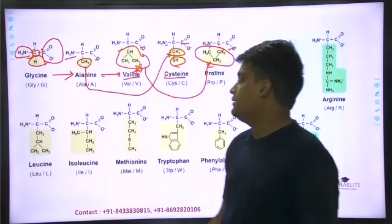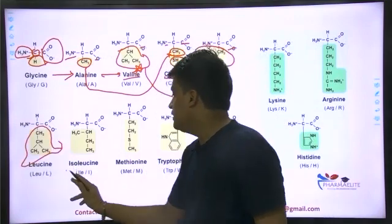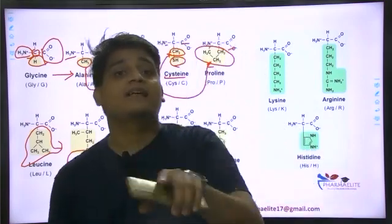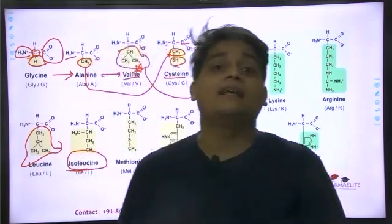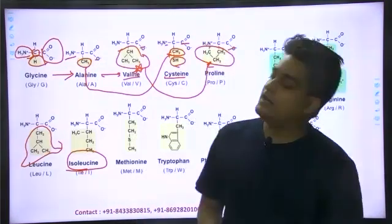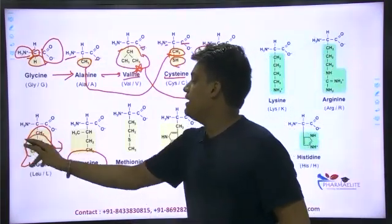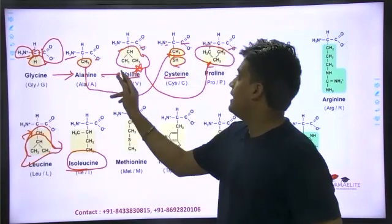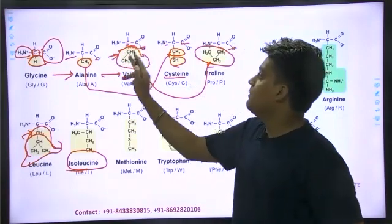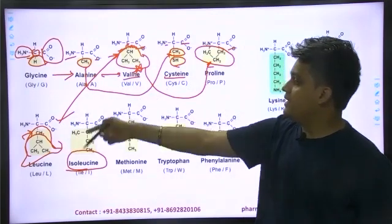Leucine has four carbons in the side chain. Leucine and isoleucine — the name isoleucine says it is the isomer of leucine. Both have four carbons but different arrangement. In leucine, adding a CH2 beyond the isopropyl arrangement of valine gives you leucine. Everything is related.